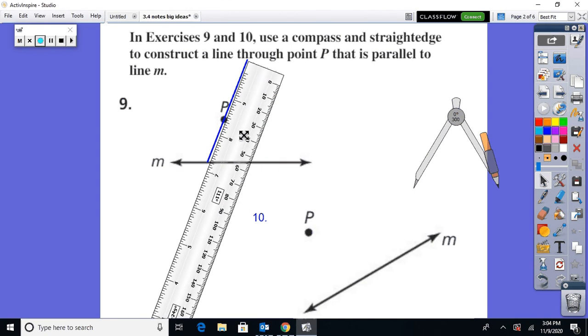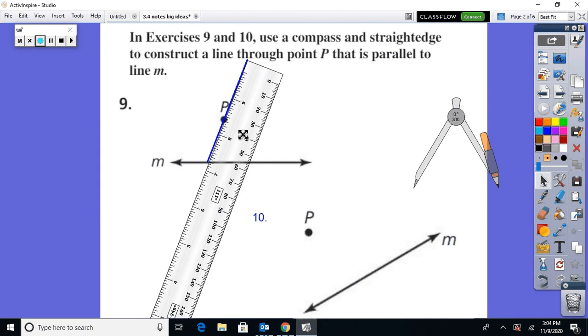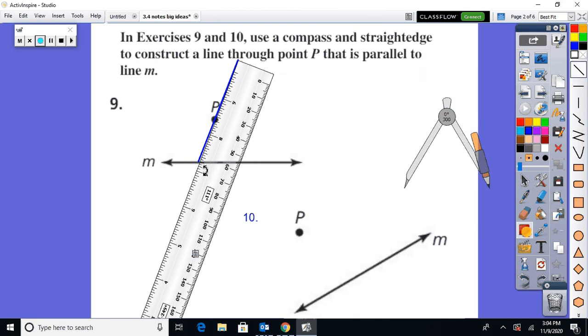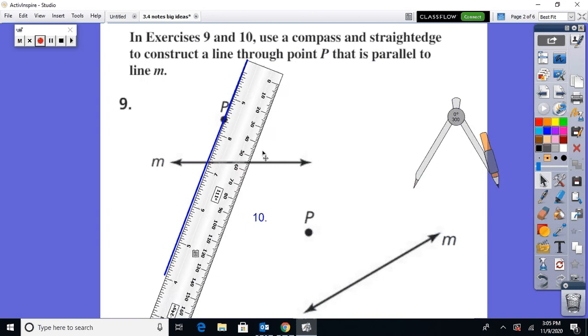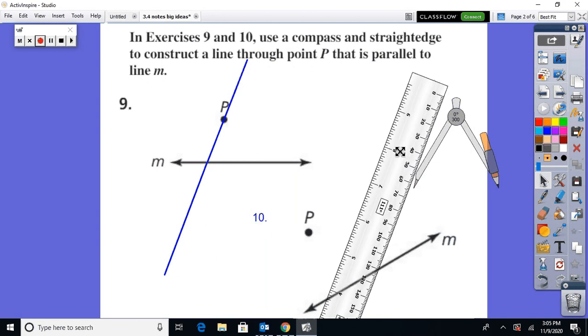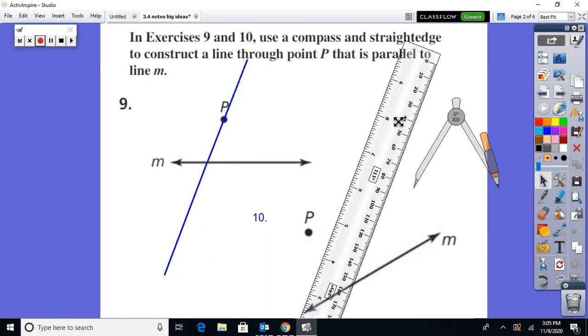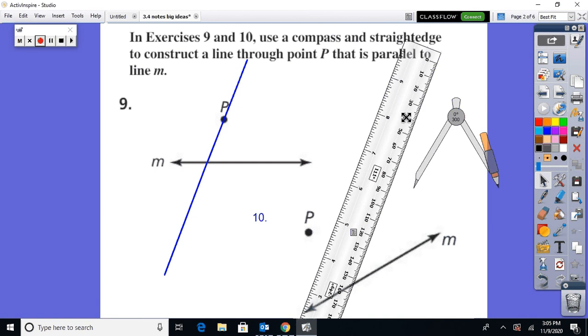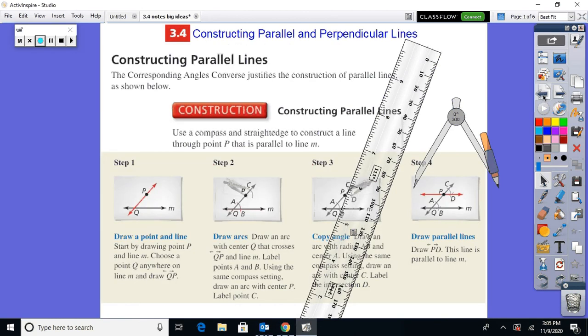So you want to use your straight edge to construct a line that is essentially going to be your transversal. And of course, you could extend it down below. It doesn't have to stop at M. You could keep it going down below. Okay, so once you have that, your transversal is first, so pass that through P.